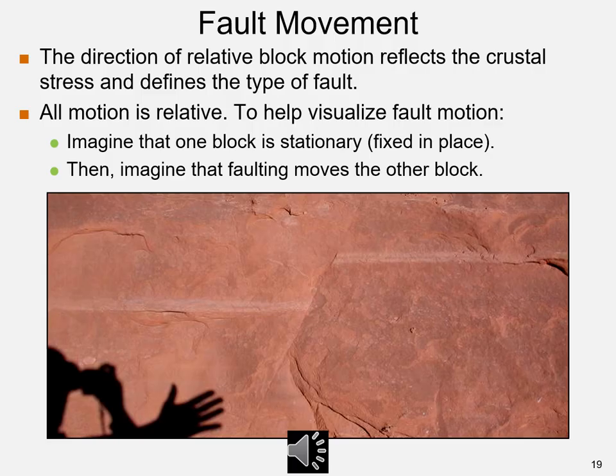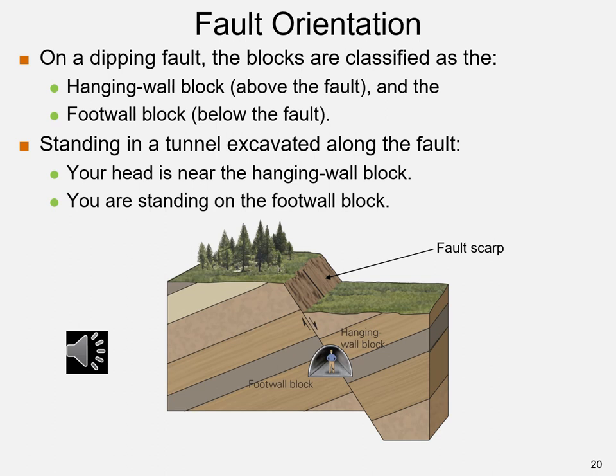Faults are planar fractures showing displacement, abundant in the crust and occurring at all scales. Sudden movements along faults cause earthquakes. Faults vary by type of stress and crustal level: compression, tension, shear, brittle (shallow), and ductile (deep). The amount of offset is called displacement or slip. On a dipping fault, the hanging wall block is above the fault and the foot wall block is below. The weathered fault scarp is the part of the crust that originally was underground.